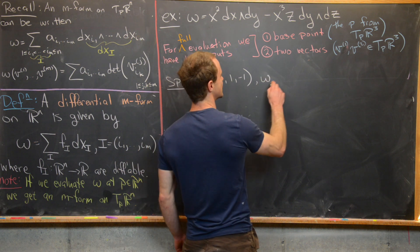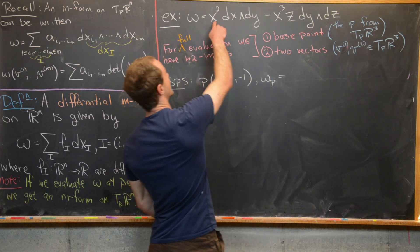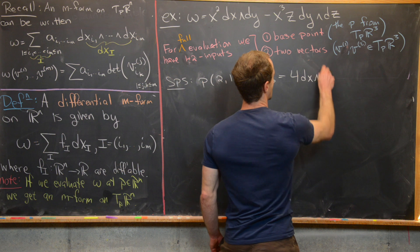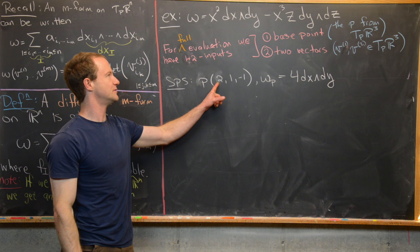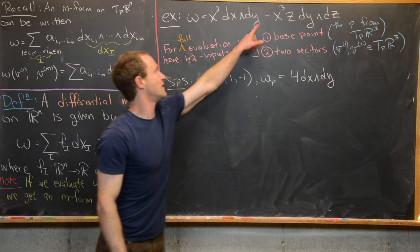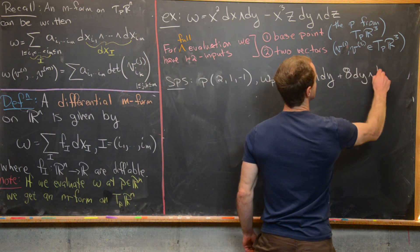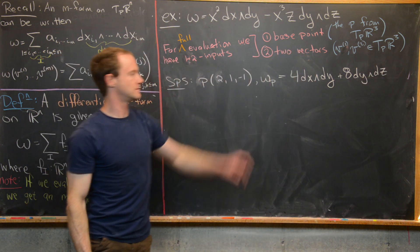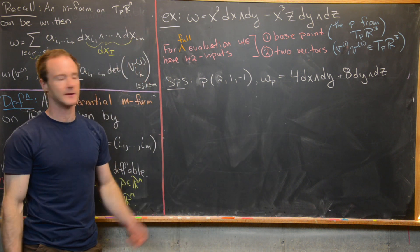Plugging P = (2, 1, −1) into omega — written as omega_P — we get: x² becomes 4, so we have 4 dx ∧ dy. Then x³z: x³ gives 8 and z = −1 flips the sign, so we have plus 8 dy ∧ dz. So omega_P = 4 dx ∧ dy + 8 dy ∧ dz, which is now a 2-form on T_P(R³).